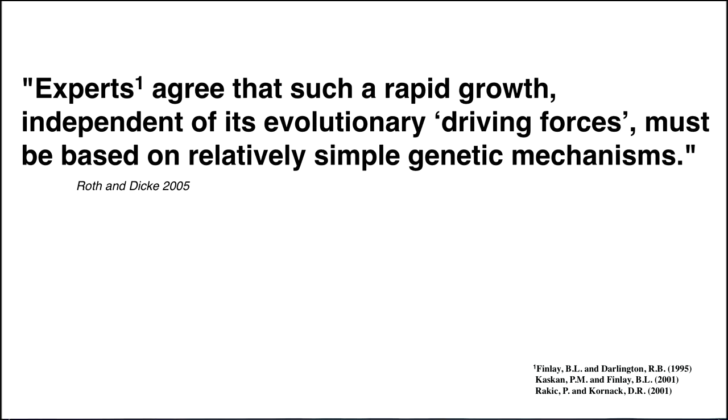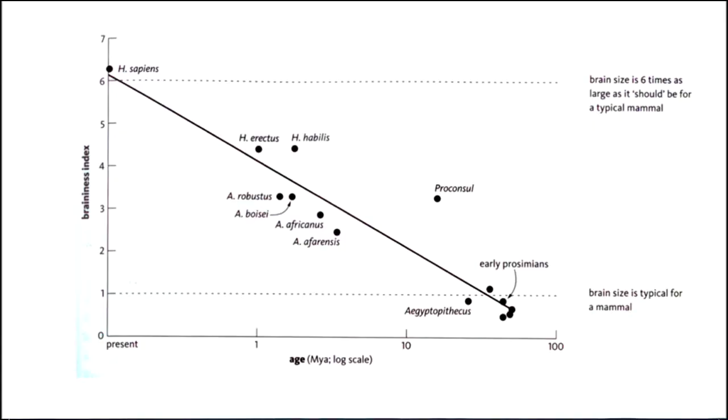Experts agree that such a rapid growth in brain size, independent of its evolutionary driving forces, must be based on a relatively simple genetic mechanism. So in other words, we don't really know what the driving forces were, but whatever they were, it's simple genetically to get there. And if you're interested in that concept, read the references in the lower right. Here's a plot of age present on the left, 1 million years, 10 million years, 100 million years ago, and the encephalization quotient or braininess index on the left. And you can see that it has increased very quickly in the last 3 million years or so. But remember that this is quite an ambiguous statement because it depends on who you're comparing, which group of animals you're comparing Homo sapiens to.